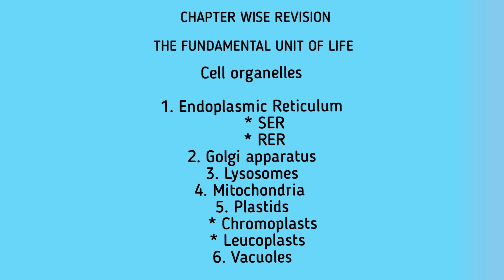The fourth cell organelle is mitochondria, known as the powerhouse of the cell. They help in oxidizing food to release energy in the form of ATP. Mitochondria is a double-membrane structure with its own DNA and ribosomes. The next is plastids — also a double-membrane structure present only in plant cells. There are two types: chromoplast and leukoplast.